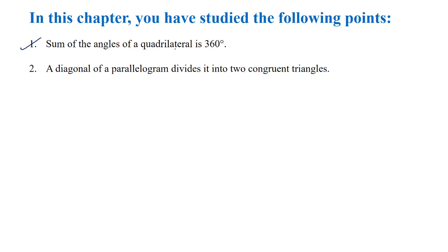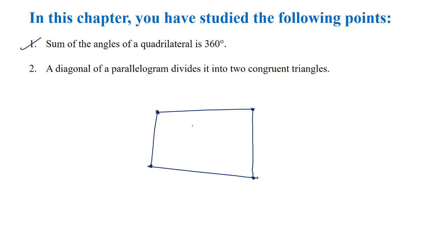The first point was that the sum of the angles of a quadrilateral is 360 degrees. Any quadrilateral — what is a quadrilateral? Any four-sided figure, which is any closed figure made up of four line segments. Quad means four. That is quadrilateral. So the sum of angles of a quadrilateral is 360 degrees.